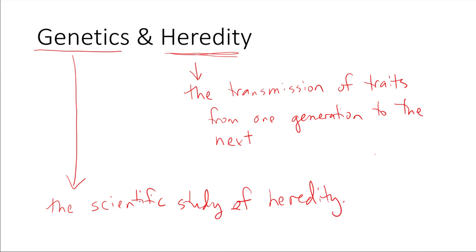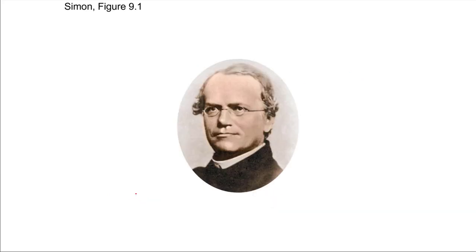The person who really got the field of genetics underway is Gregor Mendel, and Gregor Mendel is known as the father of modern genetics. He did a lot of the really foundational experiments that established some of our basic concepts of genetics. Mendel lived in Austria, he did his experiments in the 1800s, and a lot of his experiments were based on pea plants. We'll be looking at a few of the experiments that he performed.